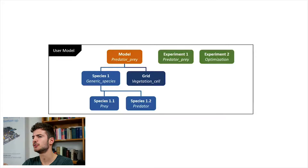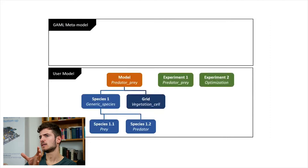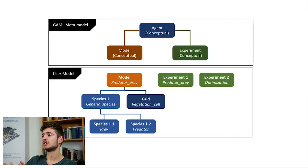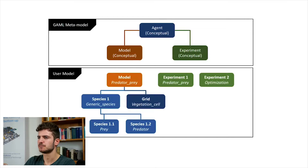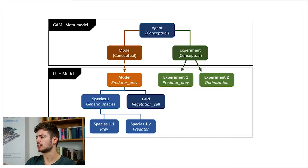The last thing I want to do is introduce you to the meta-structure of GAMA itself. GAMA has some pre-programmed definitions of agents that are used in every model definition. The GAMA meta-model is built out of three elements: an agent (the definition of what is an agent), a specialization called a model, and a specialization called an experiment. Model and experiment are also agents but more specific kinds of agents. Every time you create a model or an experiment, this model will be a representation of the conceptual definition of this model agent.